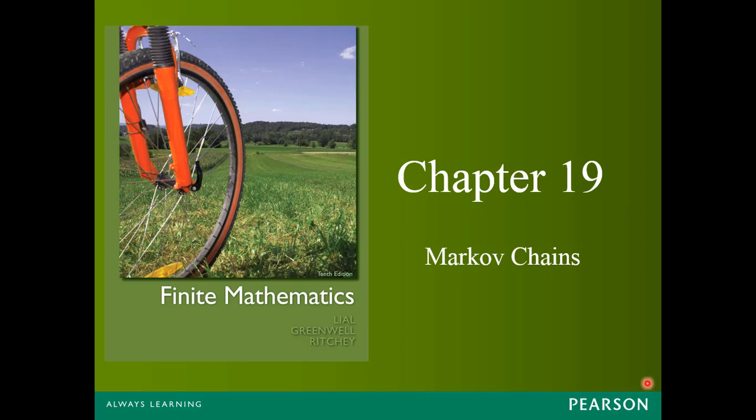Today we're going to start the last chapter for this class. This is chapter 19 and it's going to be on Markov chains. Markov chains are a particular type of process that we call a stochastic process. A stochastic process is one where the next state of an experiment is only dependent on the present state. Stochastic processes are mathematical models that evolve over time in a probabilistic manner.